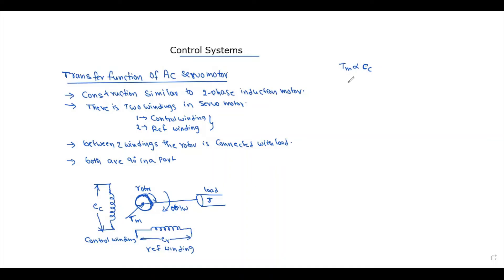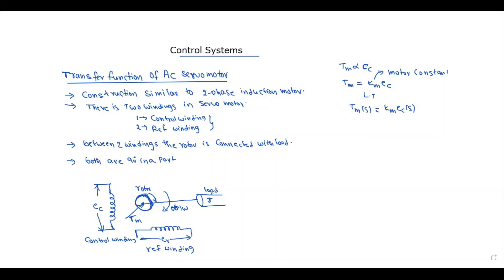So we write: Tm equals KM times EC, where KM is the motor constant. Taking the Laplace transform, Tm(s) equals KM times EC(s). Now if we apply a load, we check the torque of the motor with the load applied.